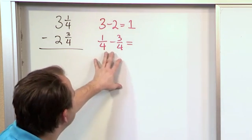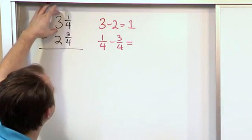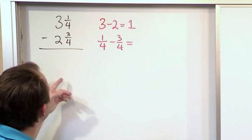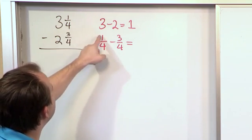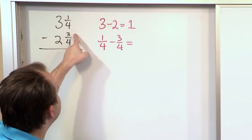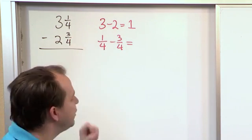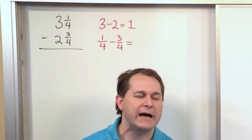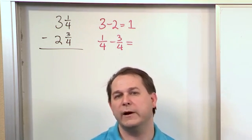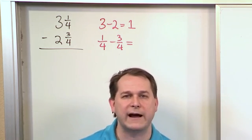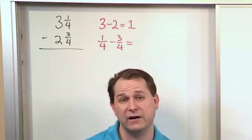So you run into problems here. Now, clearly 3 1/4 is bigger than 2 3/4, so you certainly can subtract them. But because sometimes the top fraction is going to have a smaller numerator than the bottom, you're not sure what to do sometimes when you end up subtracting these things. I could show you a method to do it this way, but honestly there's just a much easier way to subtract mixed numbers.